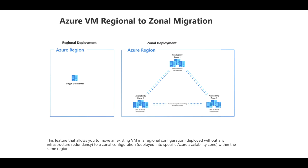To understand this concept, first you need to understand what is a Microsoft Azure region and what is Microsoft Azure availability zones. A Microsoft Azure region is a place where Microsoft has its data center. For example, in UAE we have two regions: UAE Central and UAE North. Similarly, in India we have multiple regions such as Central India, South India, or West India, and you can select the region nearest to you.